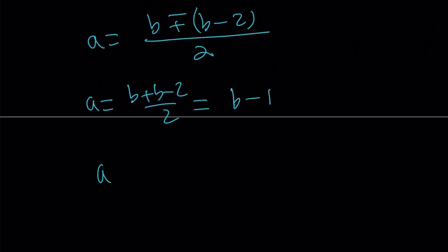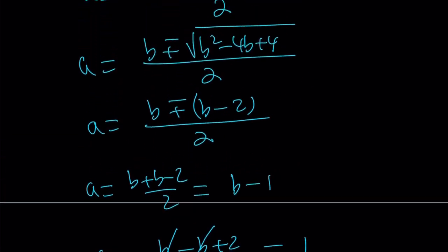And by using the minus sign, you're going to get a equals b minus b plus 2 divided by 2. And something interesting, you're going to get a equals 1, which is the other solution. So, you can also turn it into a quadratic and solve it.